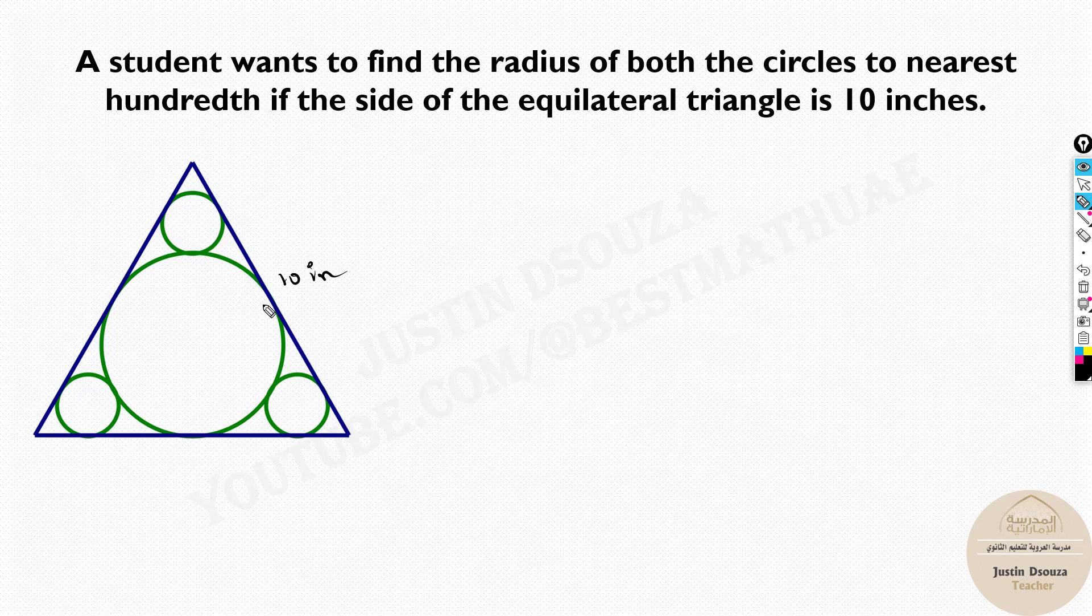So what I'll do to understand more is draw a straight line. Let me cut the equilateral triangle into two equal parts. Now this will be a 90 degree line. A straight line is drawn and I'll name this triangle.